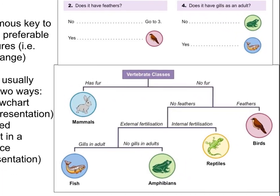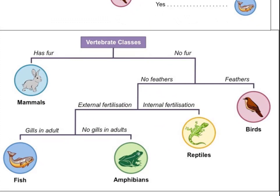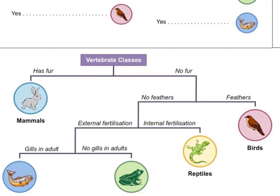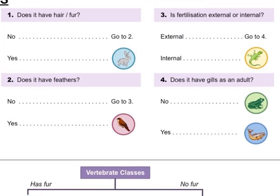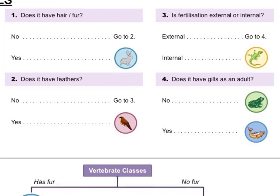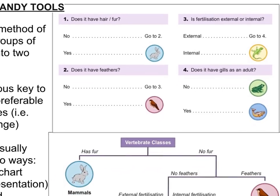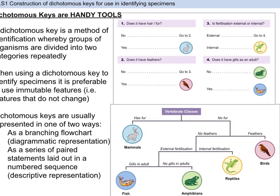Dichotomous keys are usually represented in one of two ways: as a branching flowchart diagram, or as a series of paired statements laid out in a number sequence. You can see both examples here. In the branching flowchart, vertebrate classes are narrowed down by specific distinguishing characteristics, such as body covering — fur or no fur. In the second example, a series of paired yes-or-no questions can assist by narrowing down until you reach a specific end. Neither way is more correct; what's important is that you choose the method that works for you so you can construct your own dichotomous key. We will be practicing these in class.